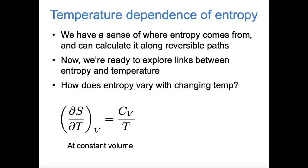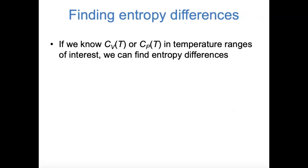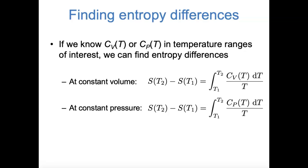This equation pertains to constant volume conditions, and without deriving it, we can write a similar equation at constant pressure: the rate at which entropy changes with temperature at constant pressure equals Cp over T. These two equations are analogous — one applies to constant volume, the other to constant pressure. As long as we know the heat capacity in a temperature range we care about, we can find entropy differences by integrating. If we want to know how much entropy changes from temperature T1 to T2, we integrate the heat capacity divided by temperature over that range.